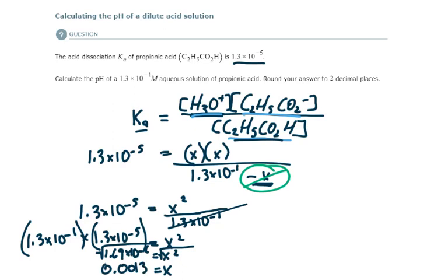Now let's check this approximation. Is the approximation valid? Well, how do we check that? We take X and we divide it by the initial concentration of our weak acid. So in this case, X is 0.0013 and the initial concentration of our weak acid was 1.3 times 10 to the minus 1. We're going to multiply this times 100% to see if it's greater than or less than 5% ionization.